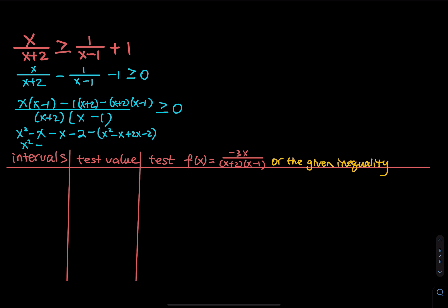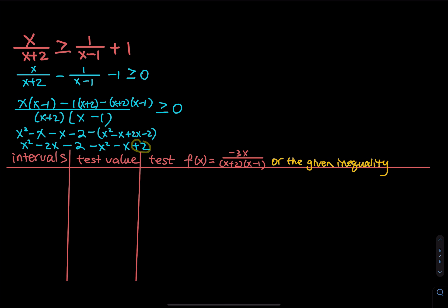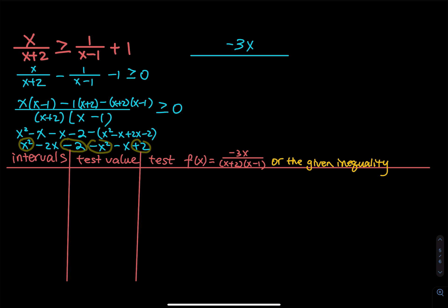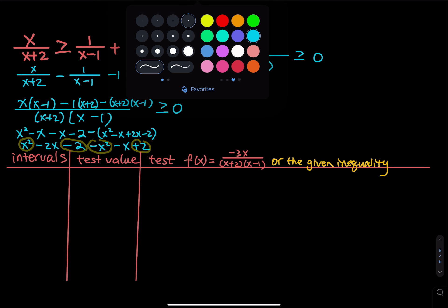So we have x squared minus 2x minus 2, and then minus x squared. The negative 1 plus 2 gives a positive x, but with a minus in front, that's minus x, and then plus 2. The 2's cancel, and the x squared terms cancel as well. So we have negative 2x subtract x, which gives negative 3x. That's negative 3x divided by the common denominator, x plus 2 times x minus 1, all greater than or equal to 0. I'm going to claim this as my function.